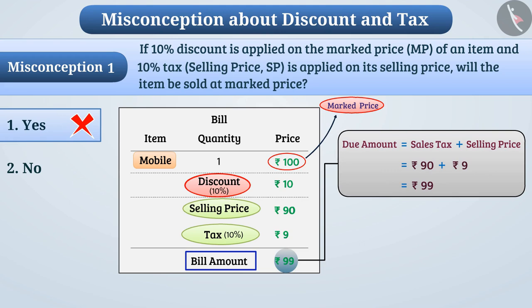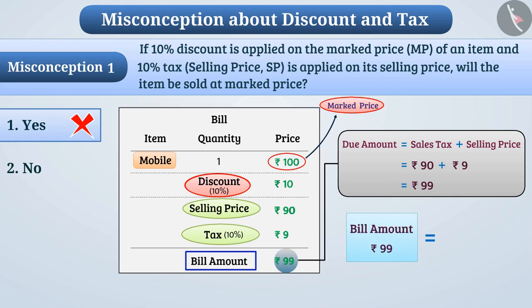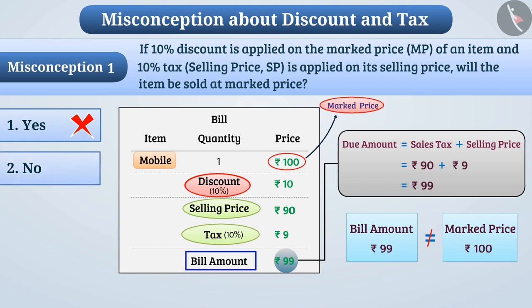Here, we can see that the bill amount is not equal to the marked price. So the goods will not be sold at the marked price. That is, option 2 is the correct answer.